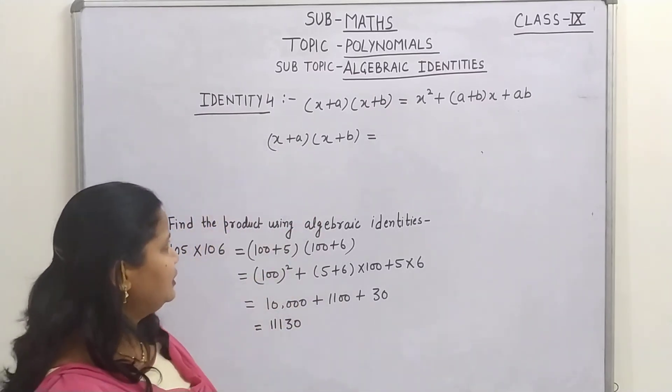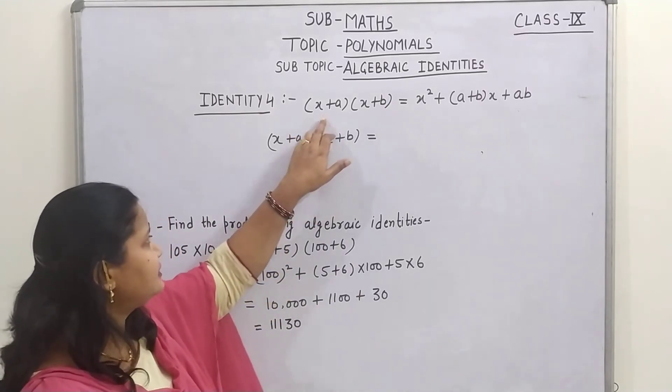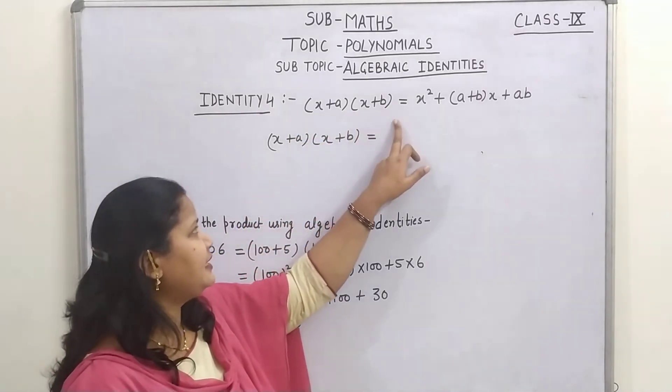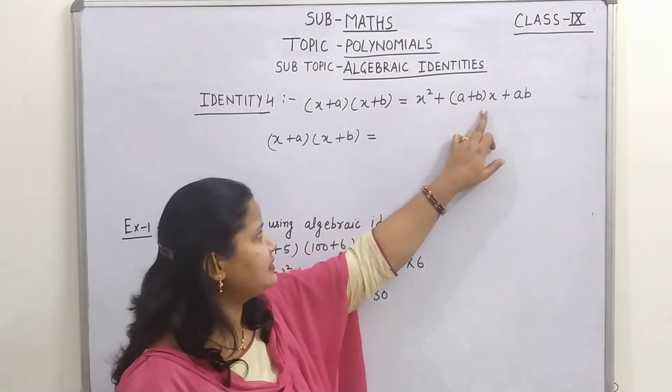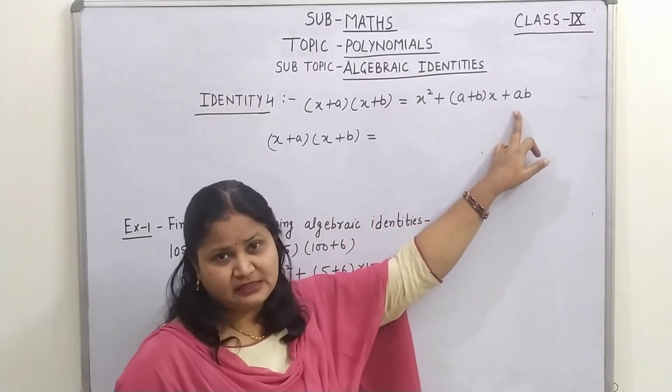Now continuing the identity 4, the identity 4 is x plus a multiplied by x plus b equals to x square plus a plus bx plus ab.